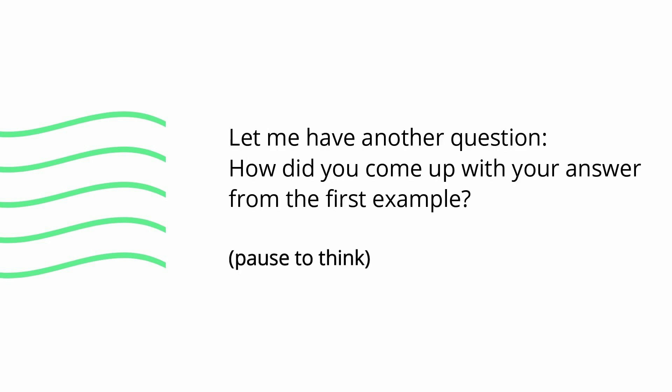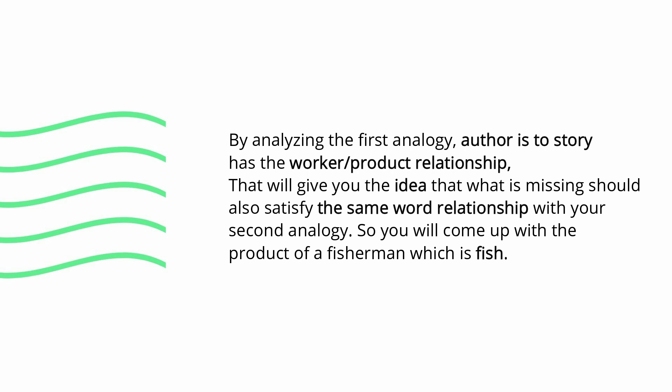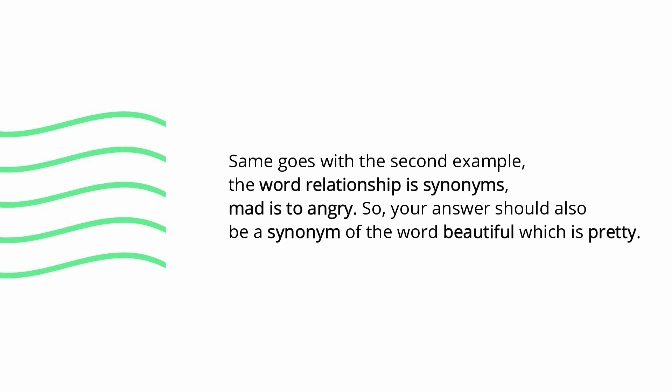How did you come up with your answer from the first example? Analyzing the first analogy — author is to story — it has the worker-product relationship, which gives you the idea that what is missing should also satisfy the same word relationship. So you come up with the product of a fisherman, which is fish. Same goes with the second example: the word relationship is synonyms. Mad is a synonym of angry, so your answer should also be a synonym of beautiful, which is pretty.